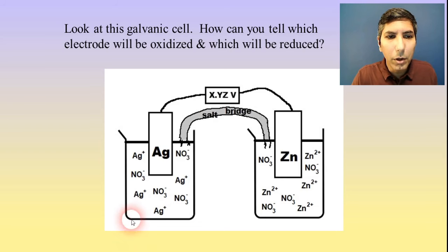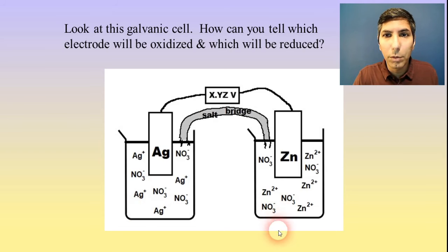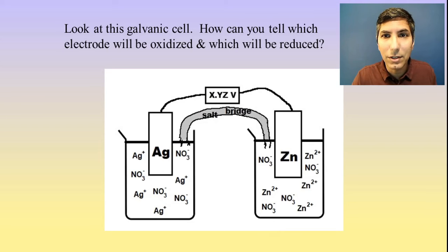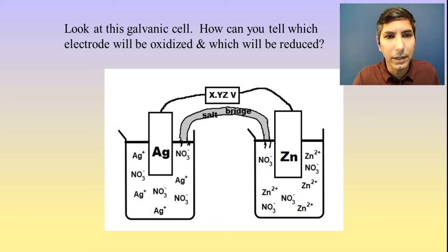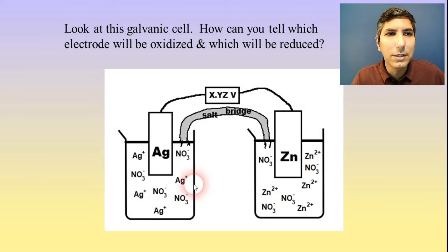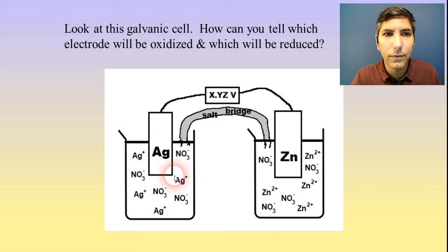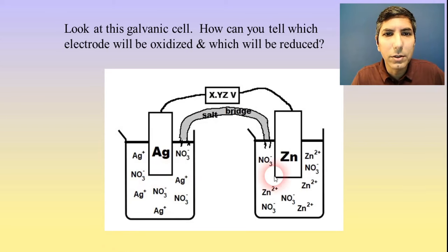In our last video, we looked at galvanic cells, and we were able to determine that one of these electrodes is going to be the anode — that's where oxidation takes place — and the other electrode is going to be the cathode, which is where reduction takes place. The question I have for you right now is how can you tell which of these two electrodes is going to be oxidized, the anode, and which one is going to be reduced, the cathode?